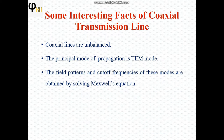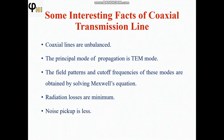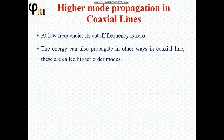The field patterns and cutoff frequencies of these modes are obtained by solving Maxwell's equations. The radiation losses are minimum and the noise pickup is less — these two are the advantages of coaxial transmission lines, because coaxial lines are shielded and covered with a jacket.